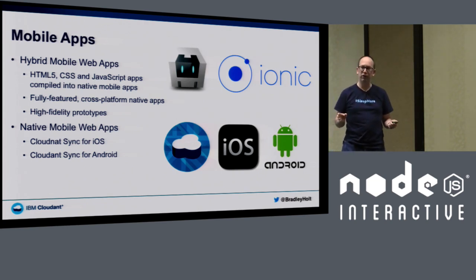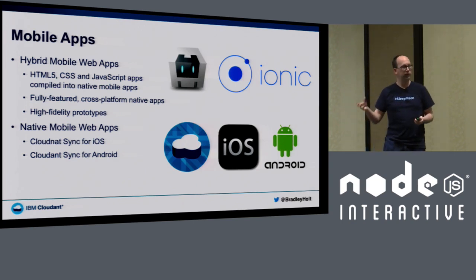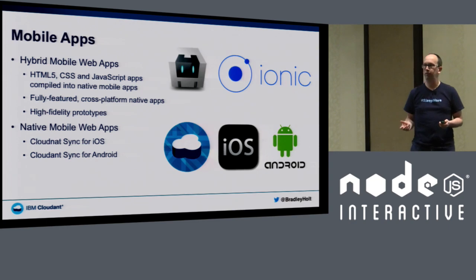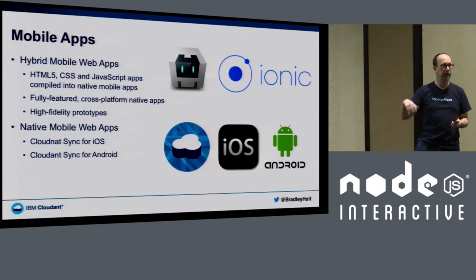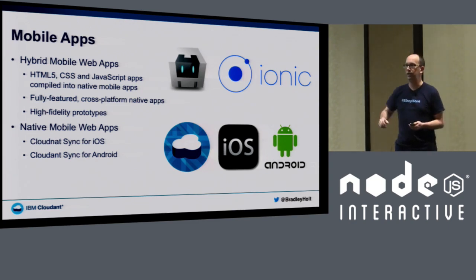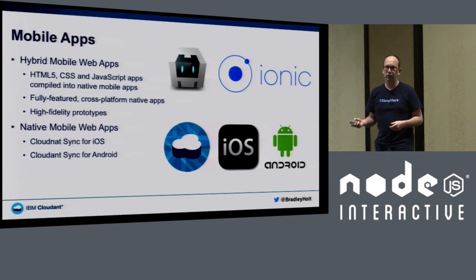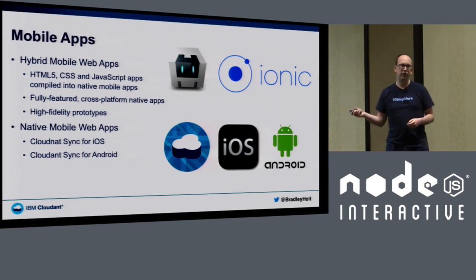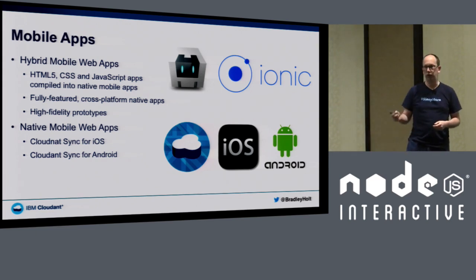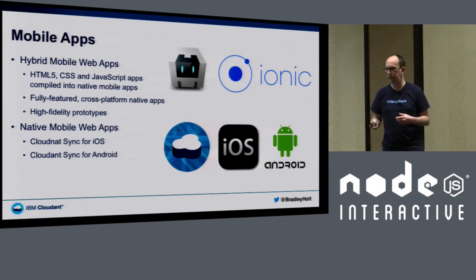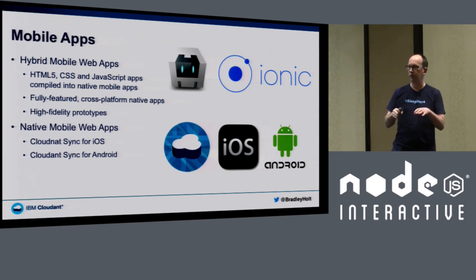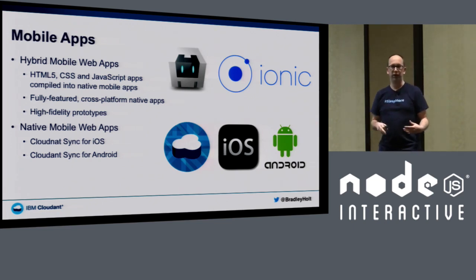Some people prefer to build native apps using native tooling. In that case, you can still use the hybrid approach for high-fidelity prototypes, and then build a native app using native tooling. If you prefer native app development, we've also open-sourced our Cloudant sync libraries for iOS and Android, which work similarly to PouchDB — storing data locally on a device and syncing.